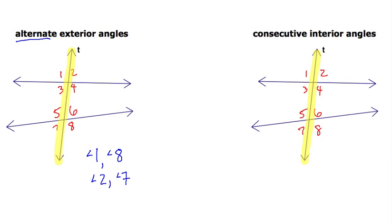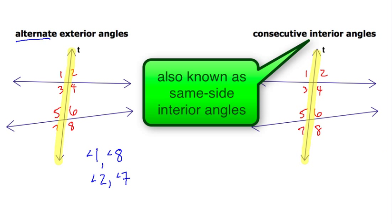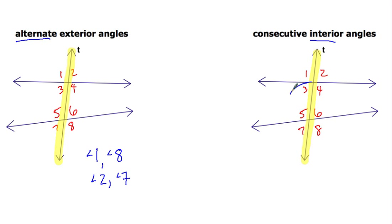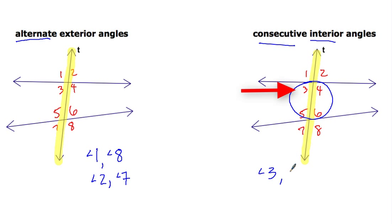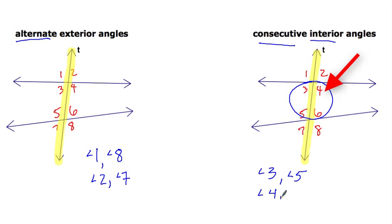My last type of angle formed when transversal T cuts across two lines is called consecutive interior angles. Interior means on the inside, and consecutive means on the same side of the transversal. So angle three is paired with angle five, since they're on the same side. Likewise, angle four and its consecutive interior angle pair is angle six. So those are the four different types of angles formed when a transversal cuts across two lines.